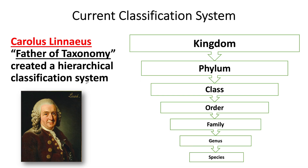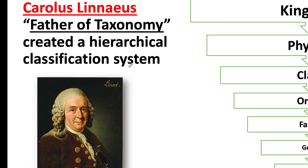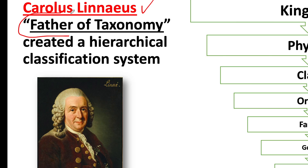So what we're going to talk about today is the father of taxonomy. The father of taxonomy is a guy by the name of Carlos Linnaeus. Remember, 'father' means this is the person whose theories we have accepted — such as Gregor Mendel, the father of genetics, and Charles Darwin, the father of evolution. Carlos Linnaeus is the father of taxonomy, and to this day we are using his hierarchical classification system, which goes: Kingdom, Phylum, Class, Order, Family, Genus, and Species.